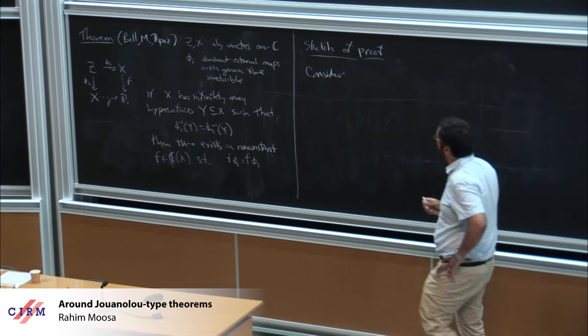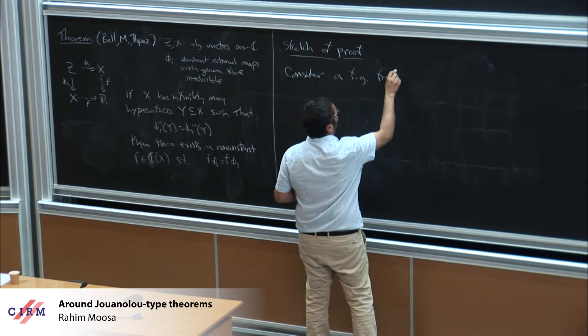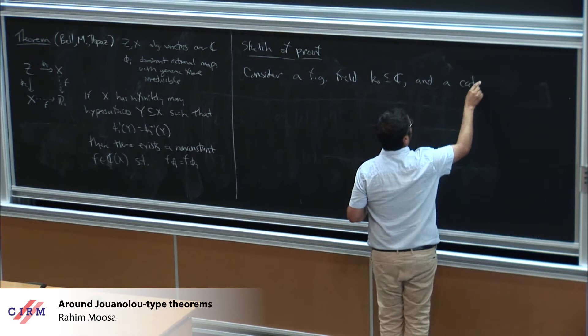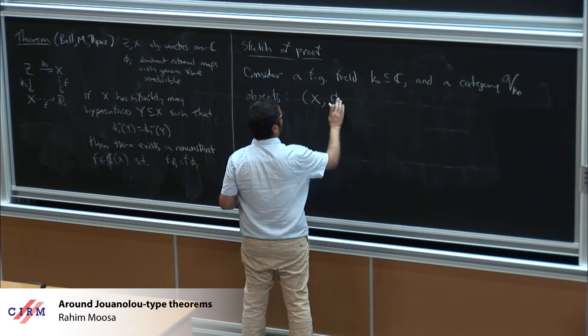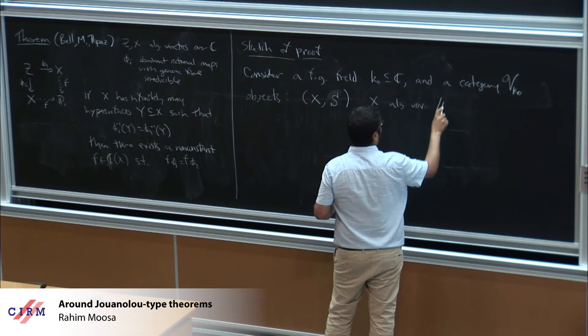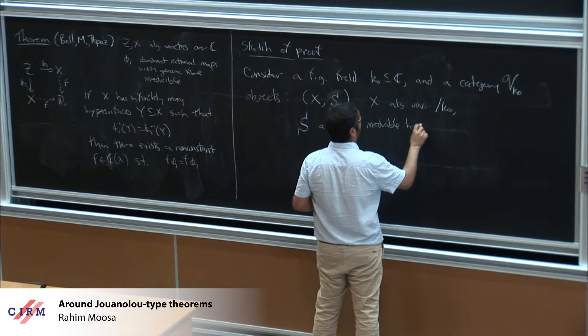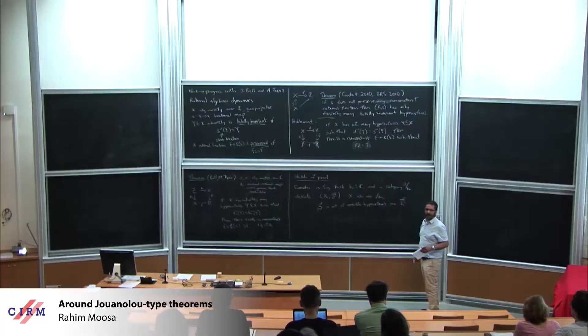What Adam's idea was that really made the difference was to consider the following category. Take a finitely generated subfield K₀, and look at the category V_{K₀} where the objects are pairs (X, S): X is a quasi-projective algebraic variety over K₀, and S is a set of irreducible hypersurfaces — not necessarily over K₀ but over K₀-bar, the algebraic closure.